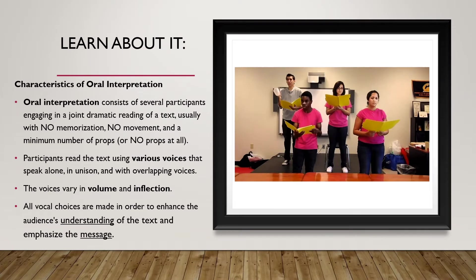Here are some characteristics of oral interpretation. First of all, oral interpretation usually consists of several participants engaging in a dramatic reading of a text. Usually there's no memorization, no movement, and a minimum number of props or no props at all. Participants read the text using various voices that speak alone, in unison, and sometimes with overlapping voices. The voices vary in volume and inflection — this is the most important characteristic. All vocal choices are made in order to enhance the audience's understanding of the story and to emphasize the message or theme.